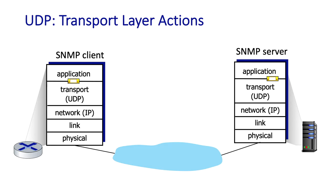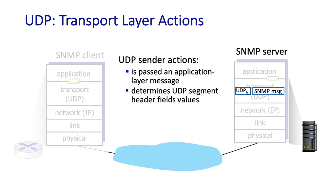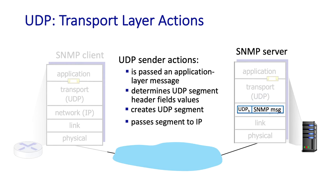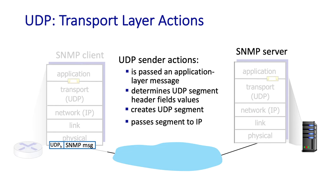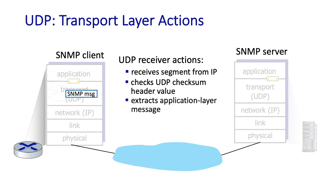Let's look at the actions of a UDP sender and receiver. Everything begins when an application passes a message down to UDP. UDP forms a UDP segment by filling out header field values and including the message — for example, an SNMP message — as payload, then passes it down to IP. IP forwards the datagram to the receiving host. On the receiving side, a UDP receiver receives a segment from the network layer, performs a checksum check, extracts the application layer message, and demultiplexes it up to the appropriate application layer socket.